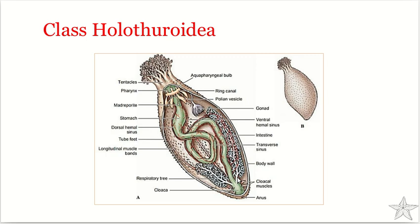When the rectum dilates, water moves through the anus into the rectum. Contraction of the rectum along with contraction of the anal sphincter forces water into the respiratory tree. The anal sphincter contracts and closes, and muscular contraction of the rectal wall pushes water into the tubes of the respiratory tree. Water exits the respiratory tree when tubules of the tree contract.